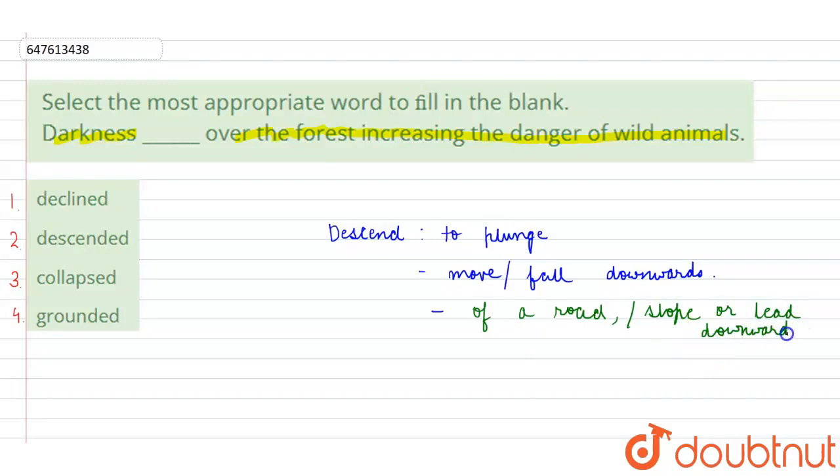So, here descended would be the correct answer. So, what will be the appropriate sentence? Darkness descended over the forest, increasing the danger of the wild animals.